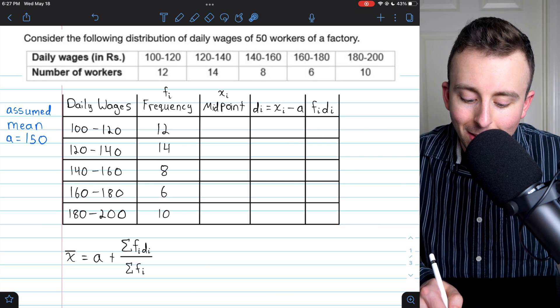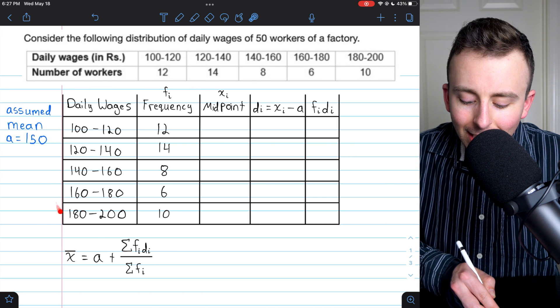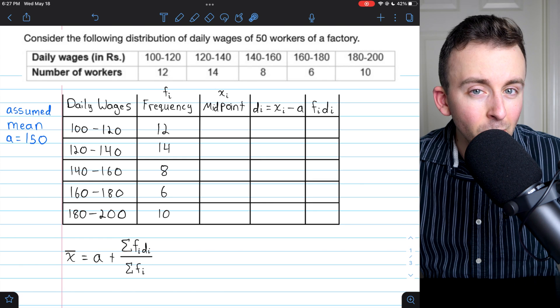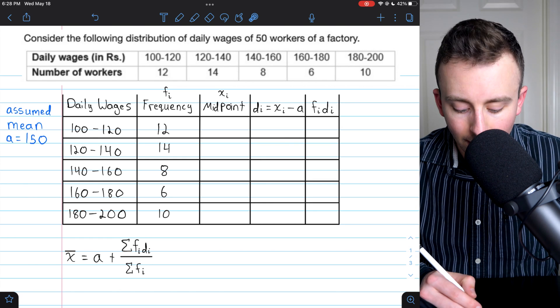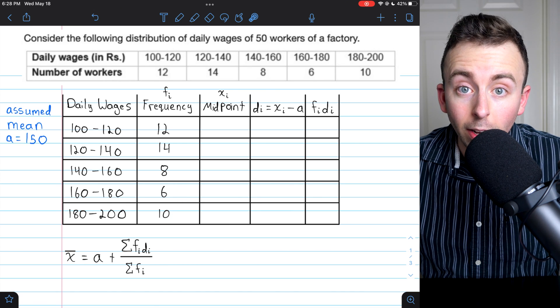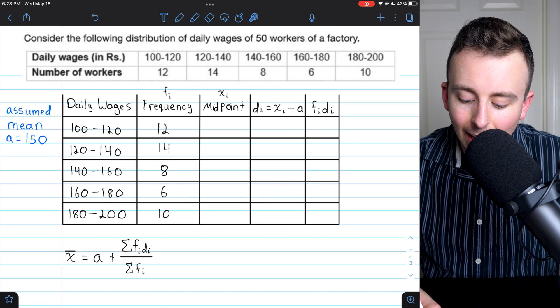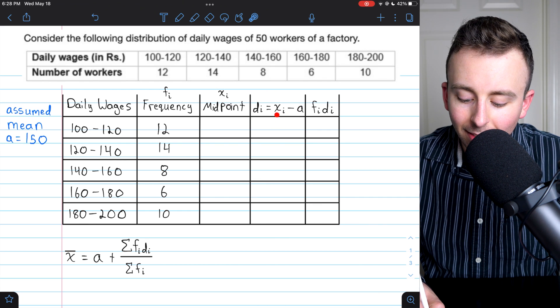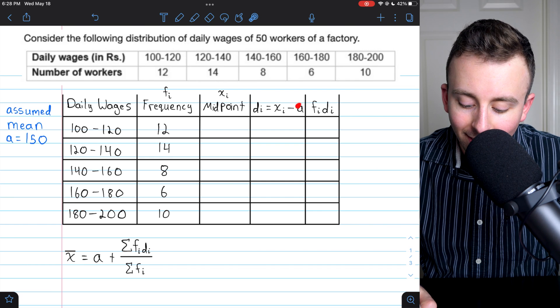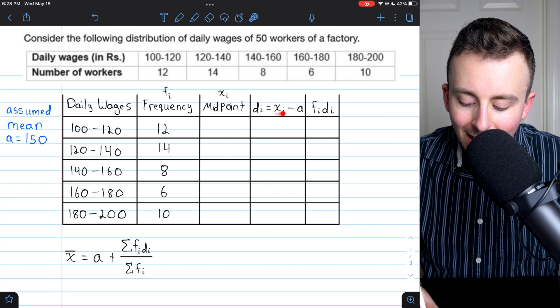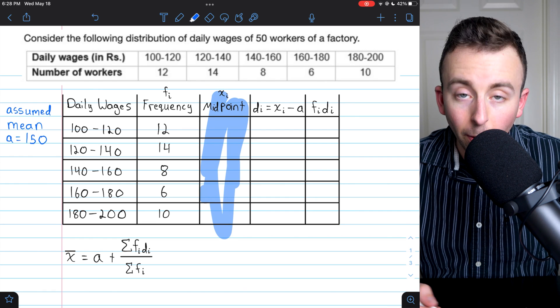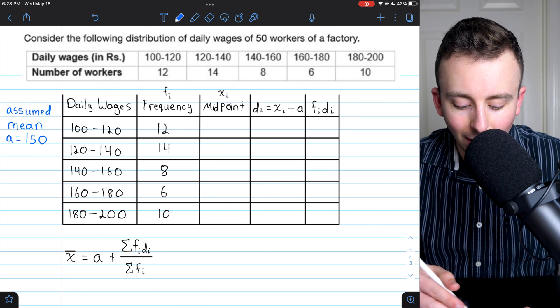In order to use the assumed mean method, it's probably a good idea to set up a table just to organize all your information. If we fill this out, we'll pretty much be done. You can see that the fi's are the frequencies of each interval, which are given to us. The di's are found by taking xi's and subtracting the assumed mean. That's A, the assumed mean, which we just talked about. The xi's are simply the midpoints of our intervals. Let's go ahead and fill those out.